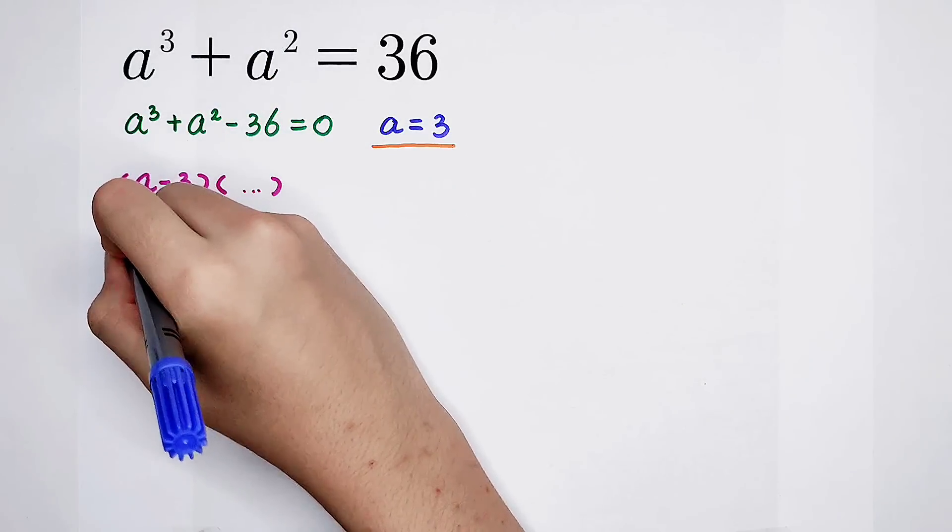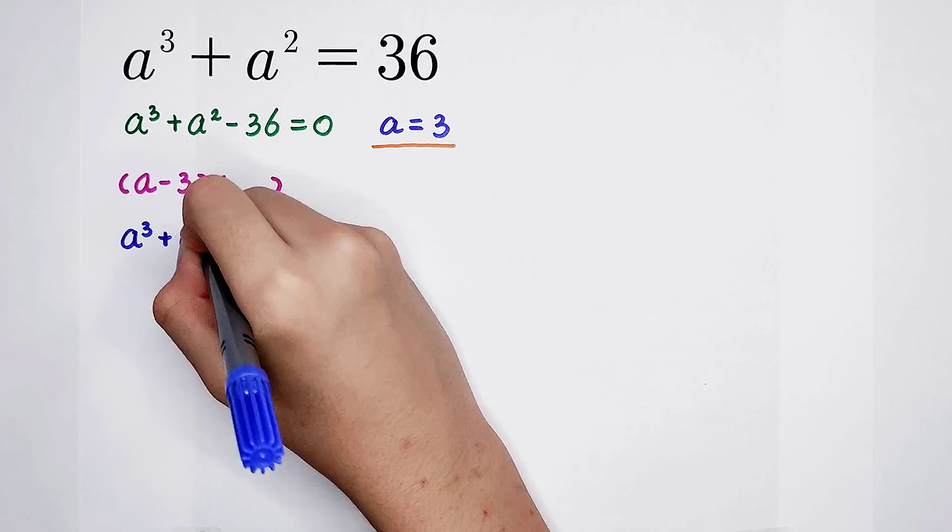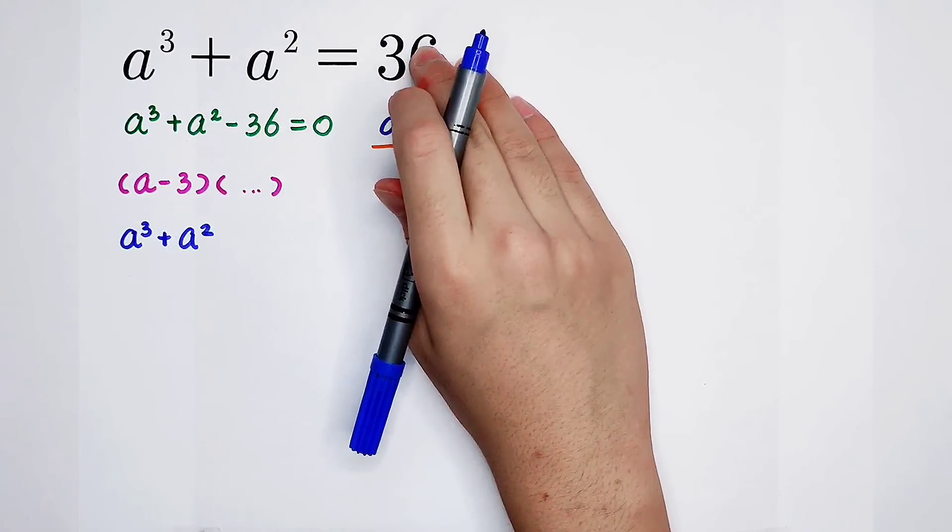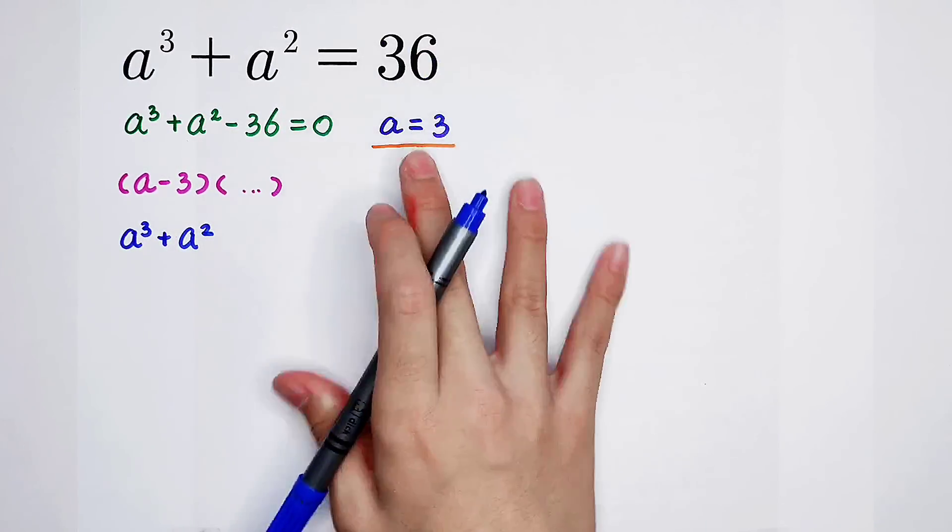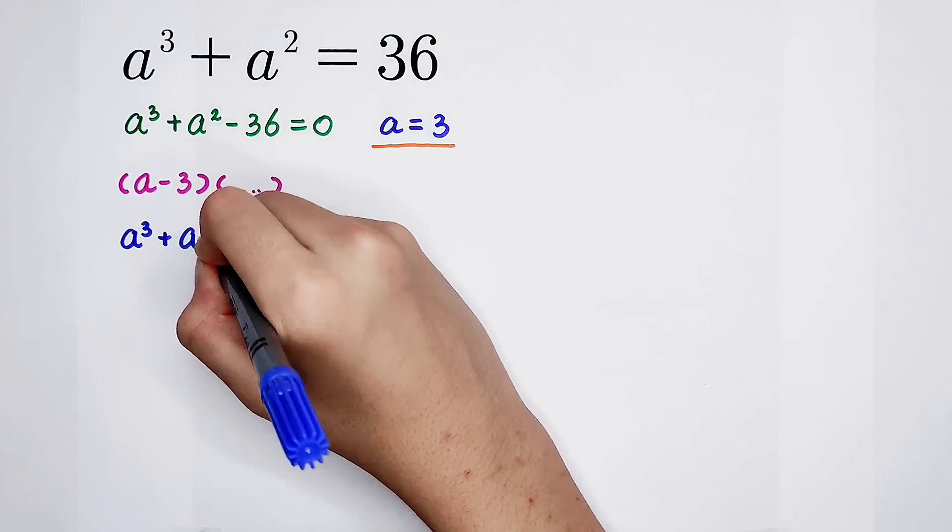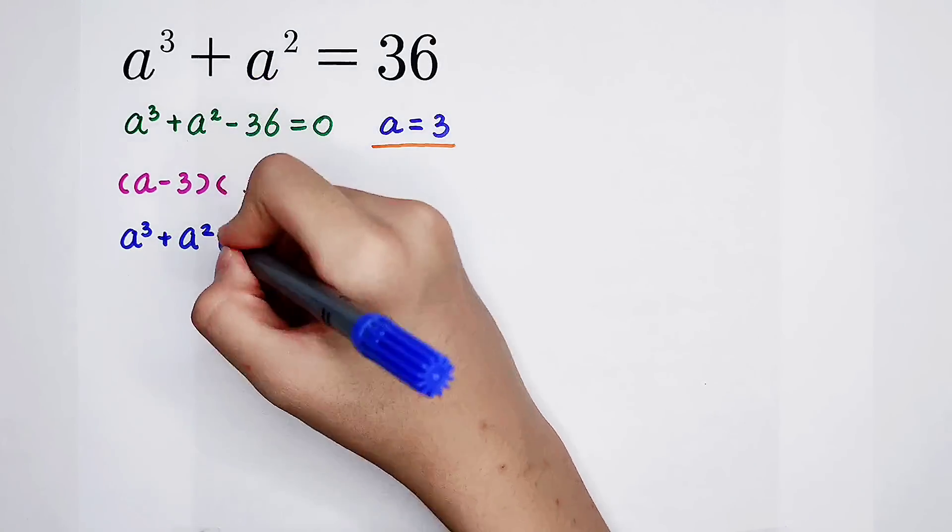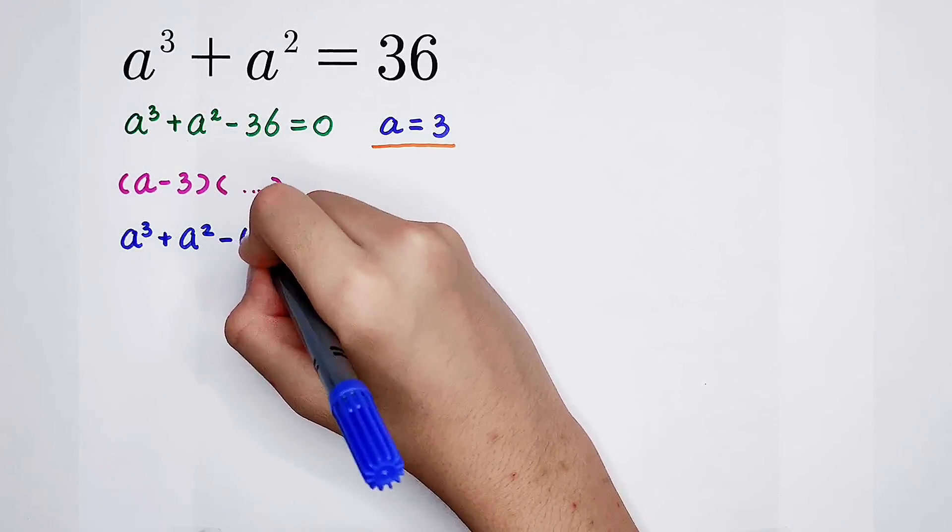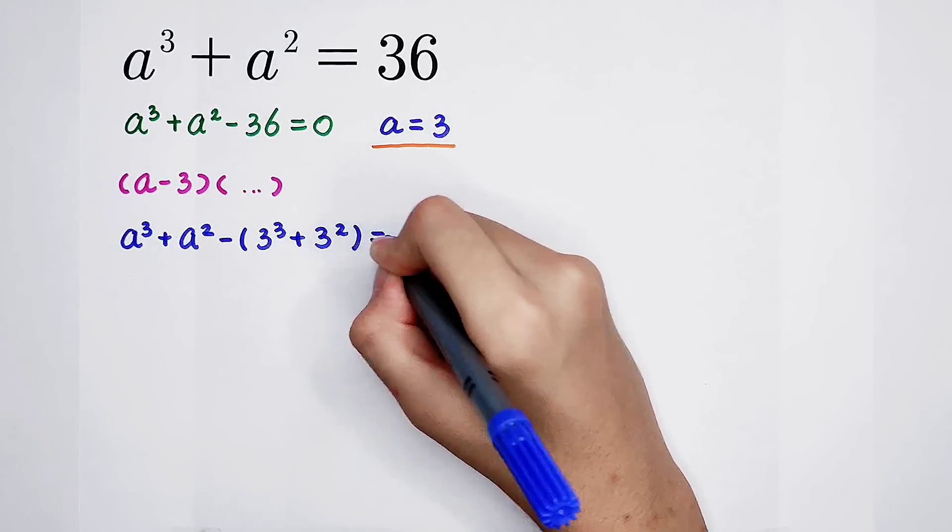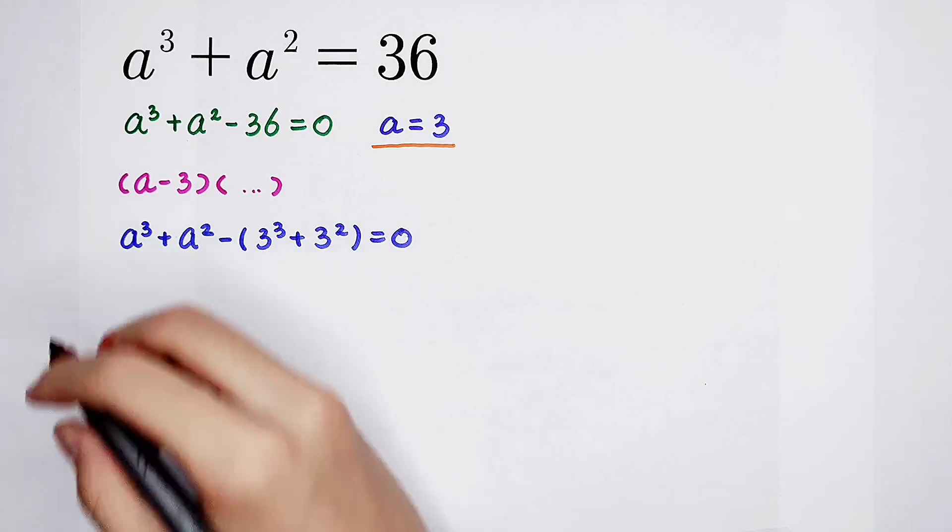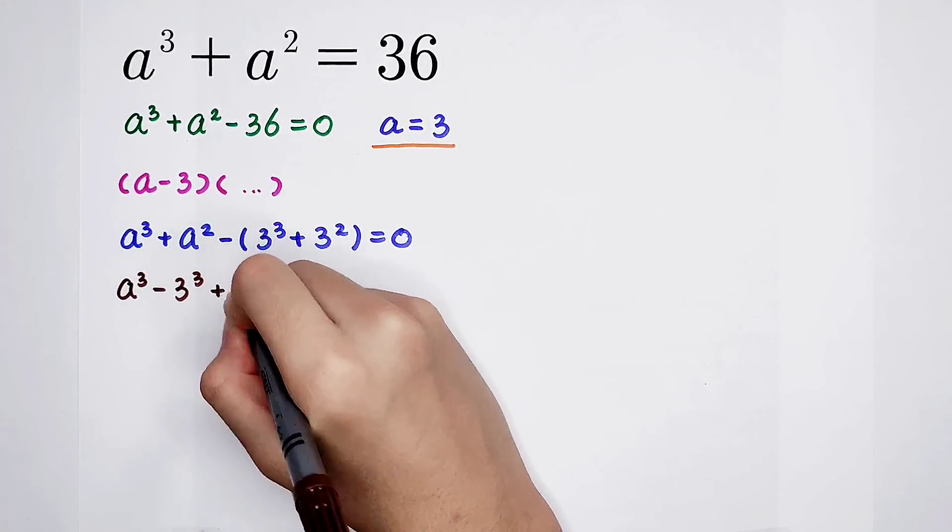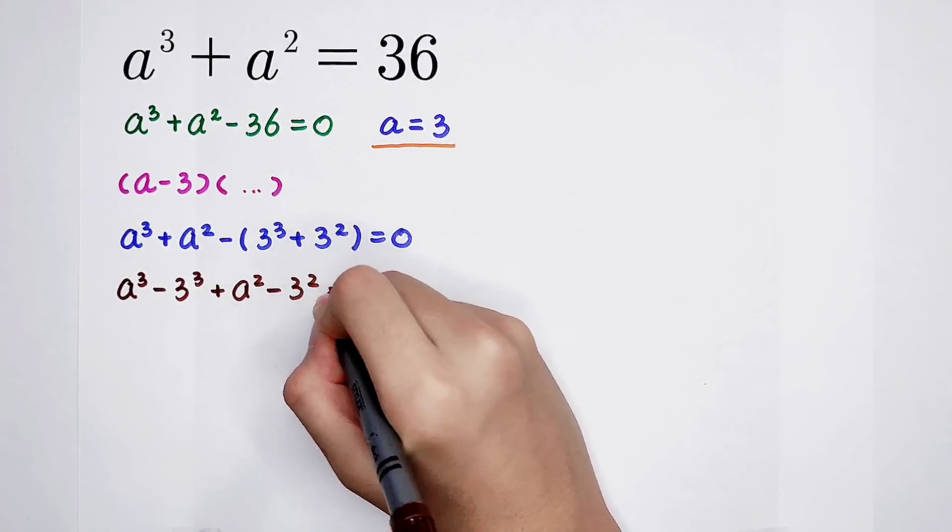Because a equals 3, this equation holds. So 3 cubed plus 3 squared equals 36. I can write this minus 36 as minus bracket, don't forget, 3 cubed plus 3 squared. Then a cubed minus 3 cubed plus a squared minus 3 squared equals 0.